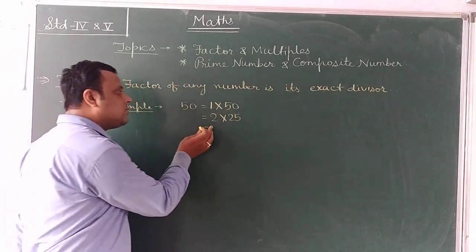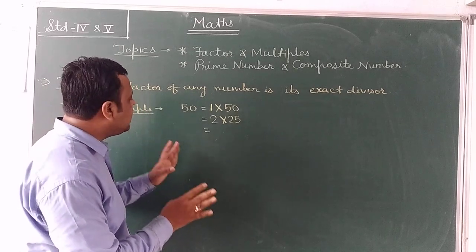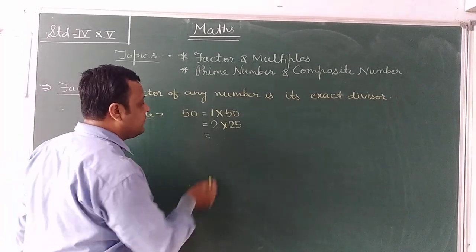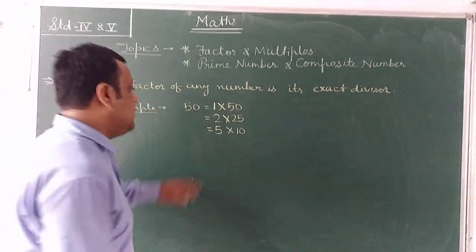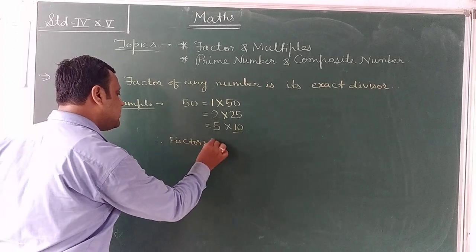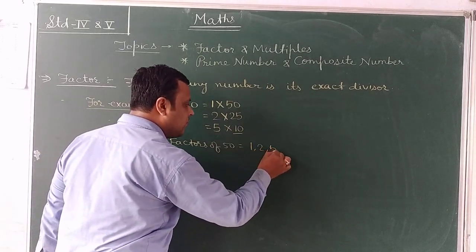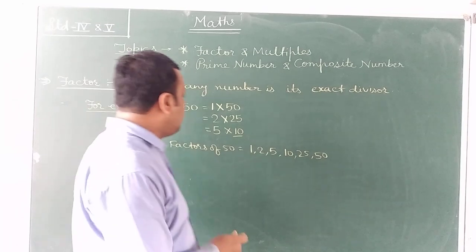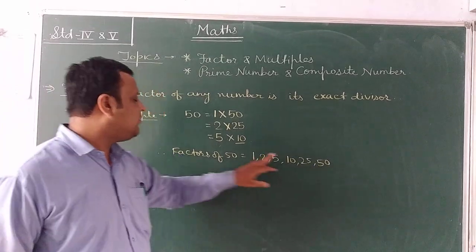3 is not a factor of 50 because 3 cannot divide 50 exactly. Now think about 4 — 4 does not exactly divide 50, so 4 is not its factor. Now think about 5. 5 is a factor because 5 times 10 equals 50. Another factor is 10. Therefore, the factors of 50 are: 1, 2, 5, 10, 25, and 50.